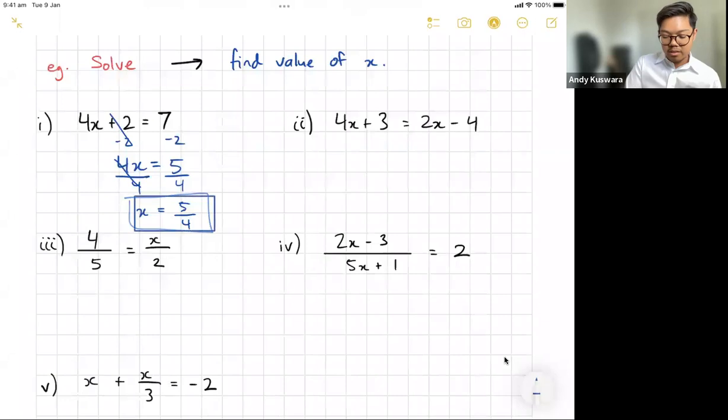Which leaves me x equals to 5 on 4. Not a clean answer, but rarely is in advanced mathematics. So there's your answer, x is 5 on 4. We've got your answer, we've solved. Let's move on.